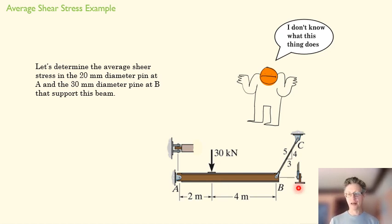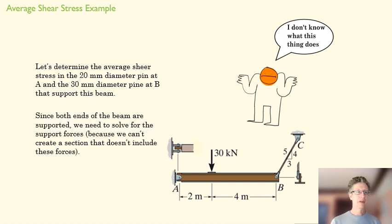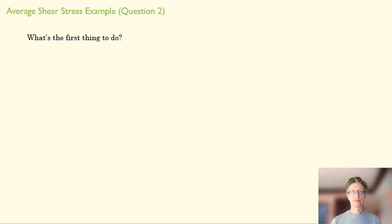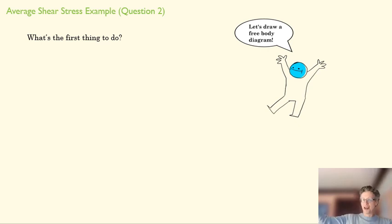Since both ends of the beam are supported, we can't just ignore, just pick one section and ignore support forces. We're going to have to find our support forces. So that'll be our first step. So what do we do in order to find our support forces? We draw a free body diagram. Woohoo! He says, let's draw that free body diagram. So go ahead and do that.